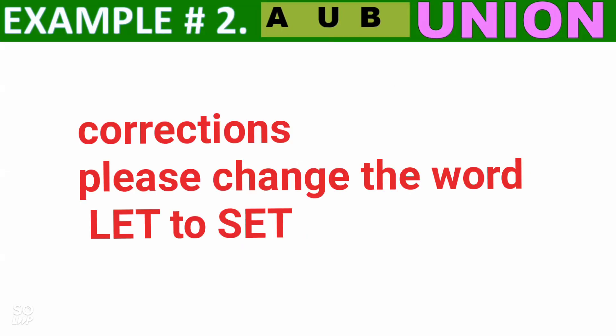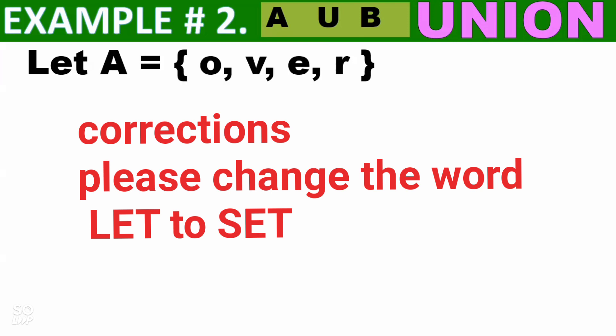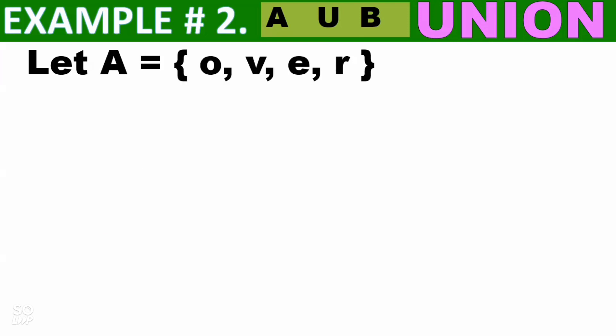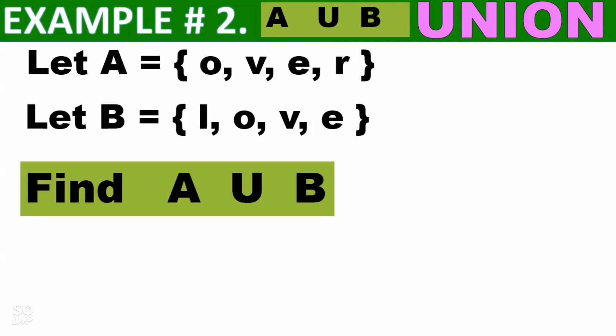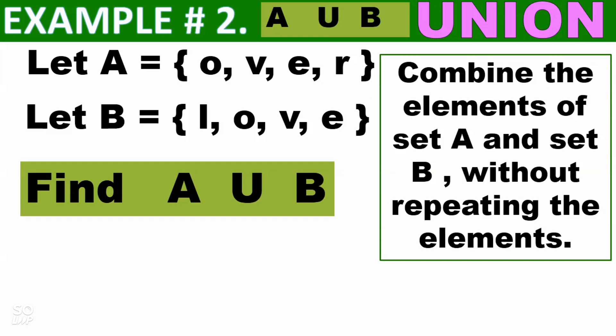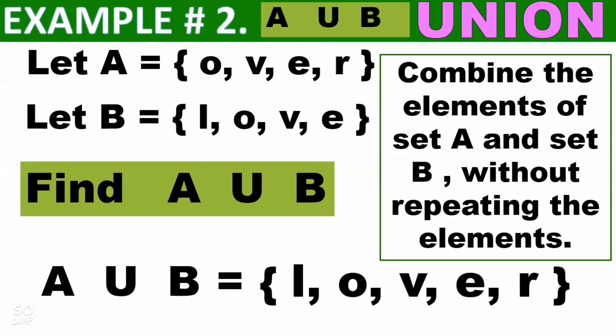Next, let's have another example of union. Set A = {O, V, E, R} and set B = {L, O, V, E}. Find A union B. The first step is to combine the elements of set A and set B without repeating the elements. So A∪B = {L, O, V, E, R}.